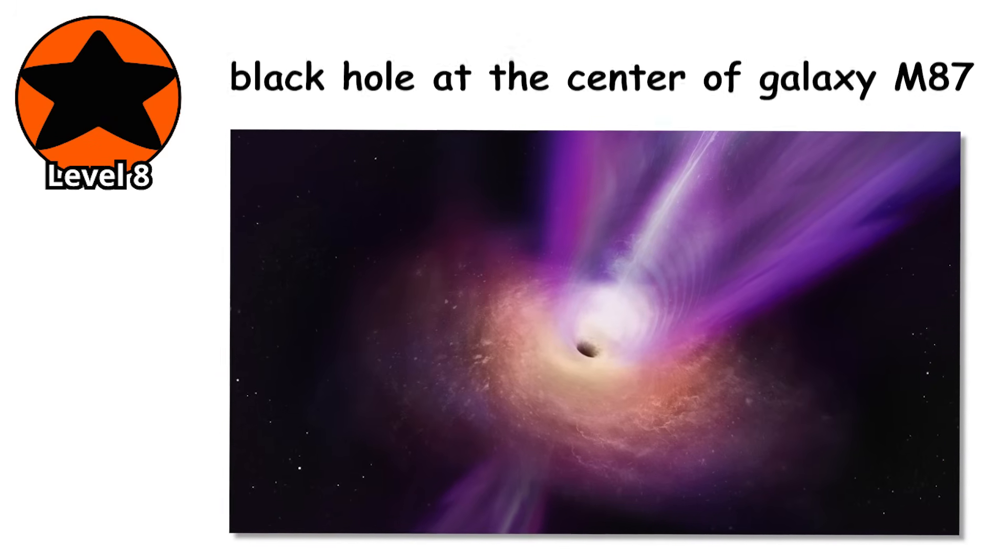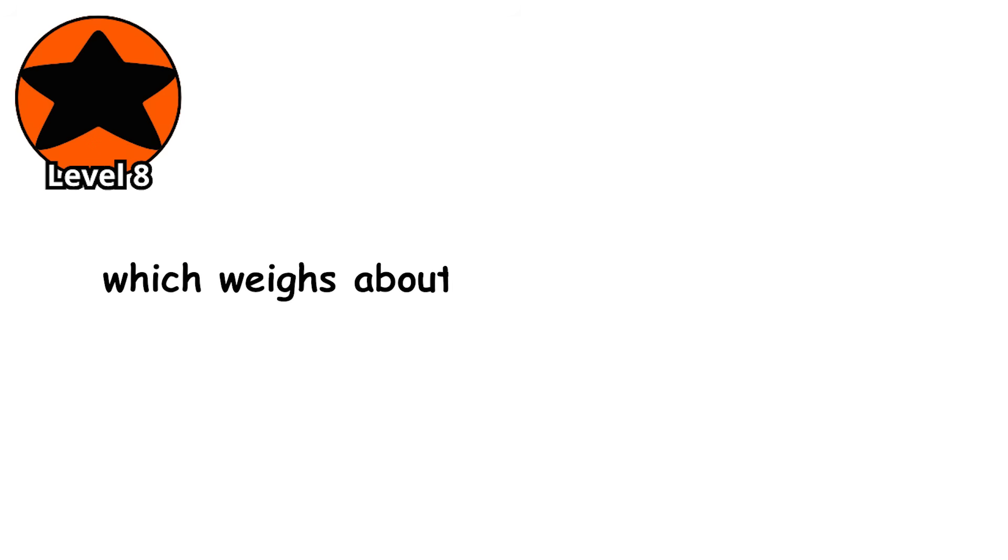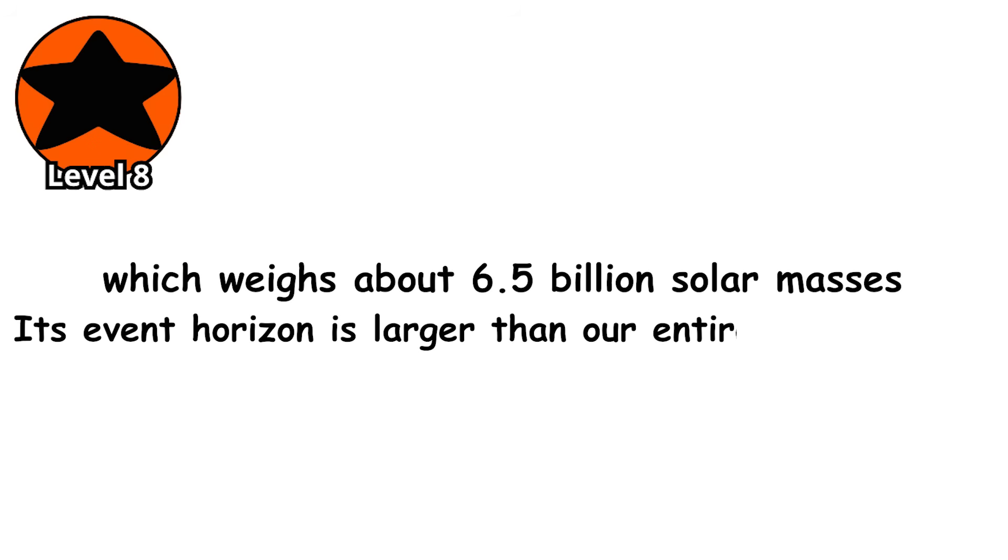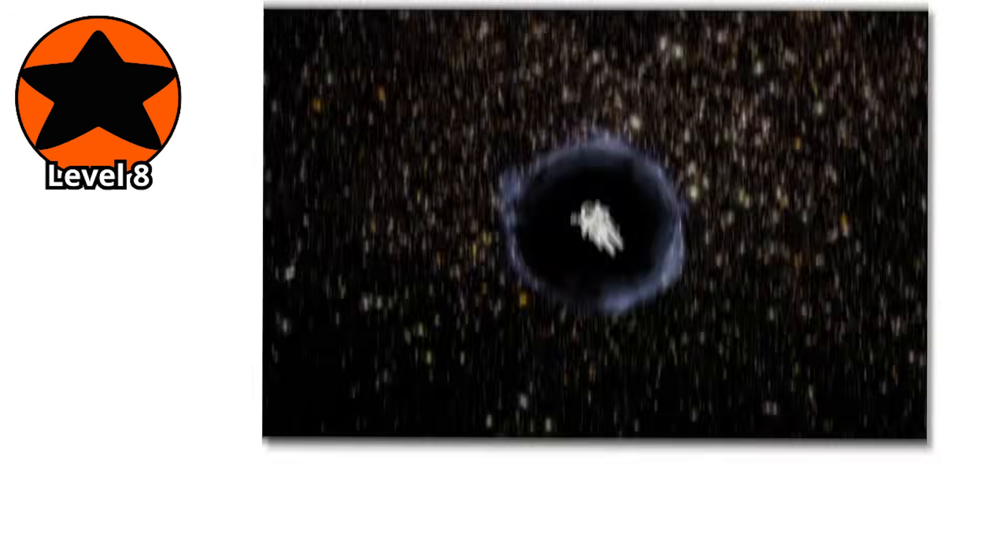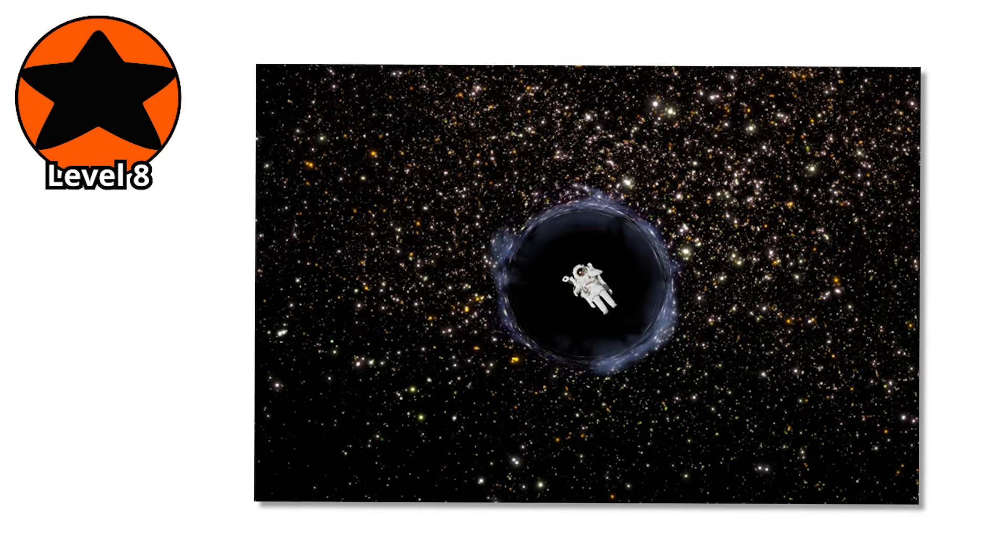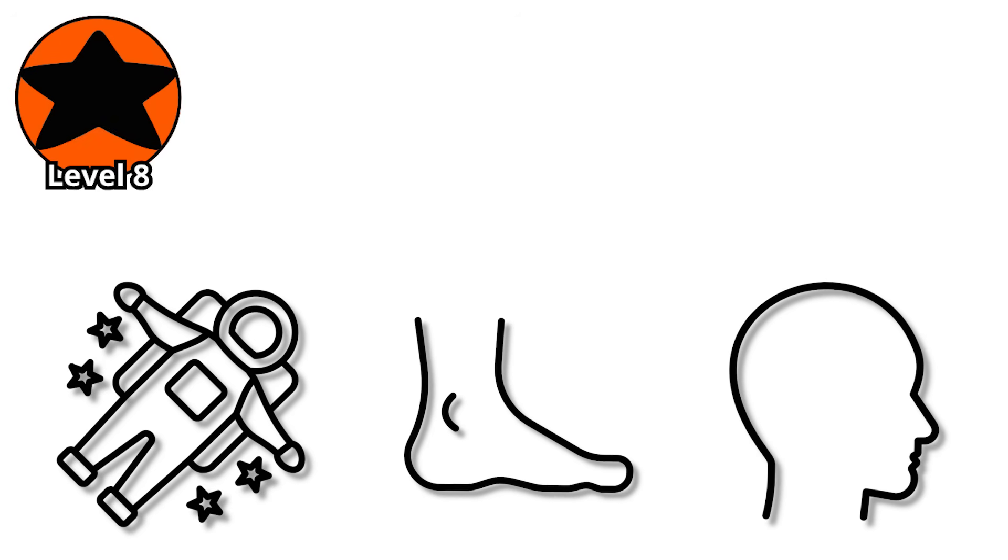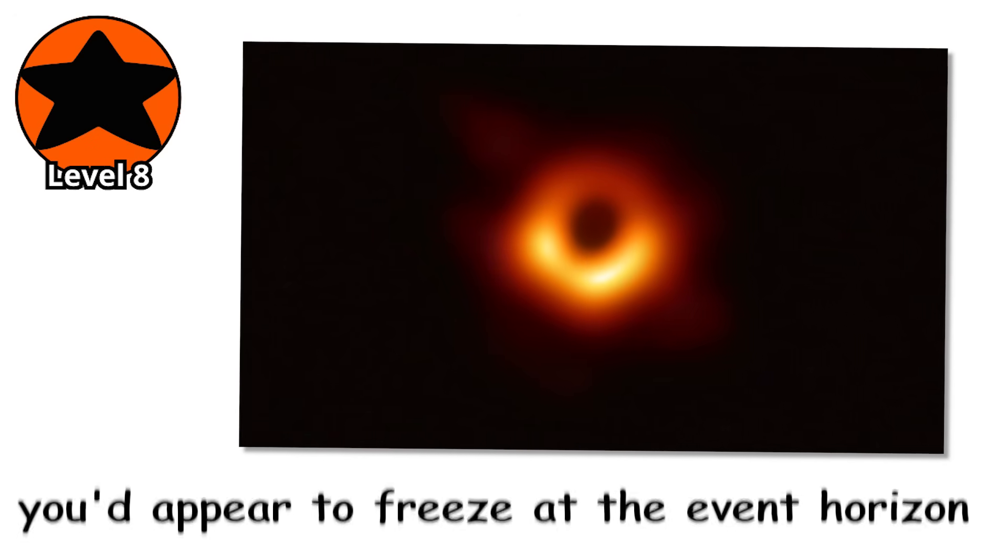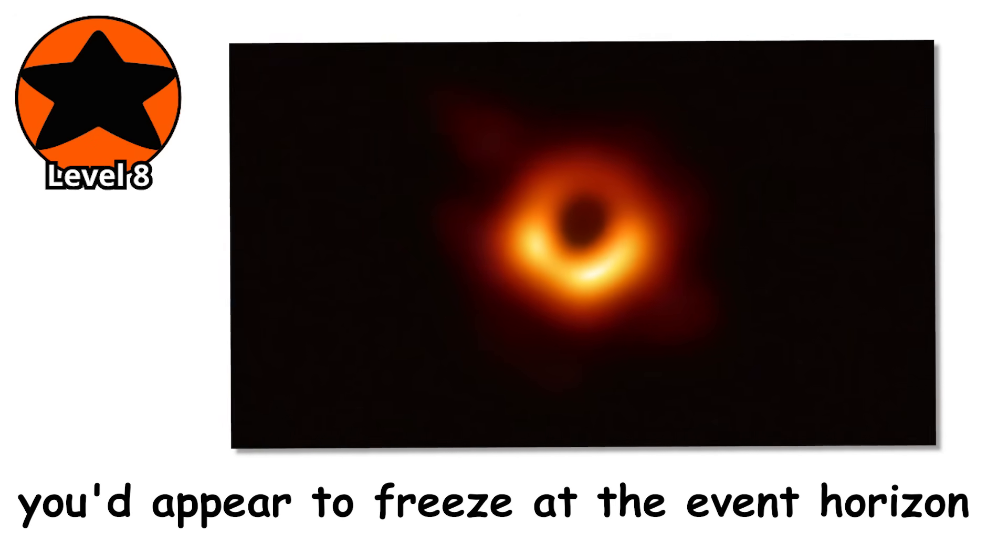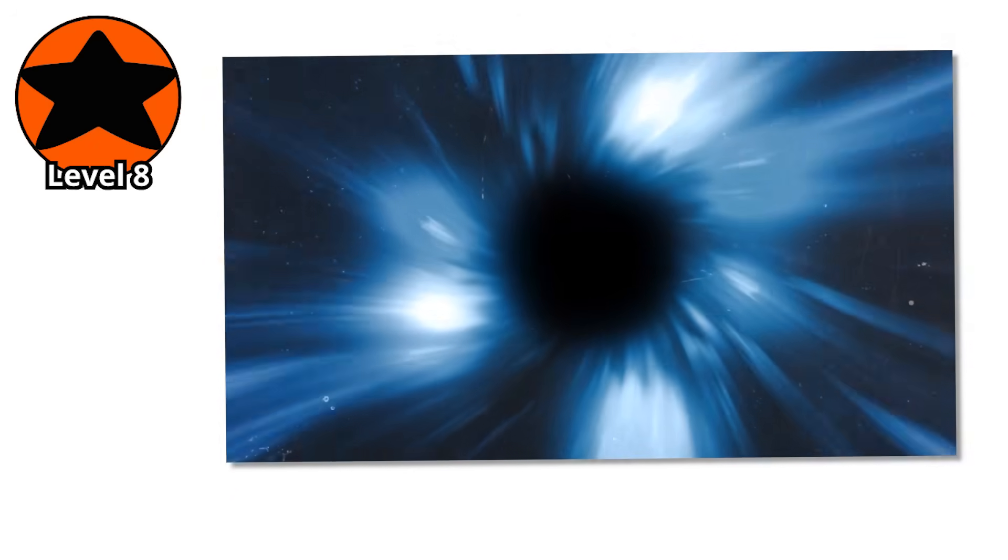And then there's the extreme end, the black hole at the center of galaxy M87, which weighs about 6.5 billion solar masses. Its event horizon is larger than our entire solar system. If you fell into a black hole, you'd experience spaghettification. The tidal forces would stretch you into a long, thin strand of atoms as the gravity difference between your head and feet became insurmountable. Time itself would behave strangely. To an outside observer, you'd appear to freeze at the event horizon, your image slowly fading and red shifting into invisibility over billions of years.